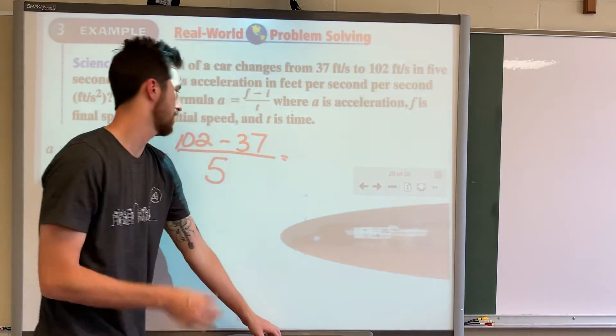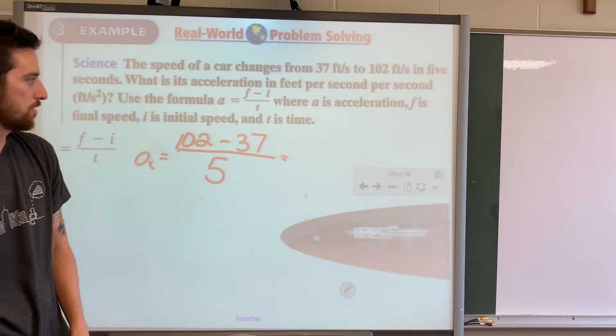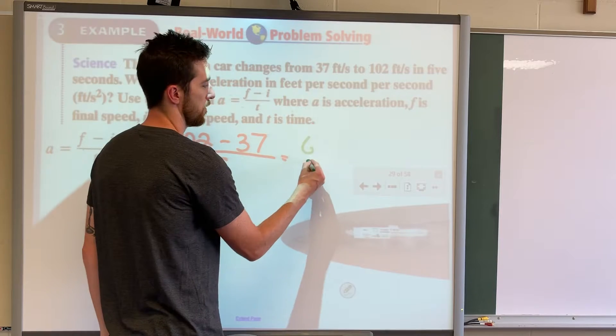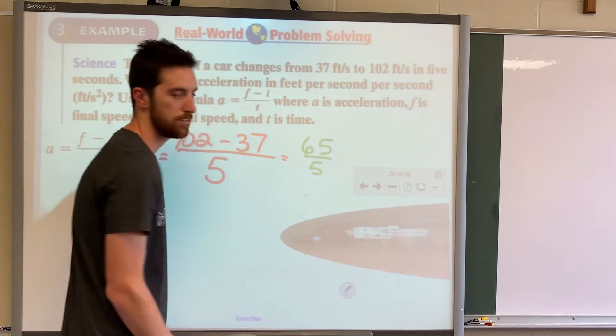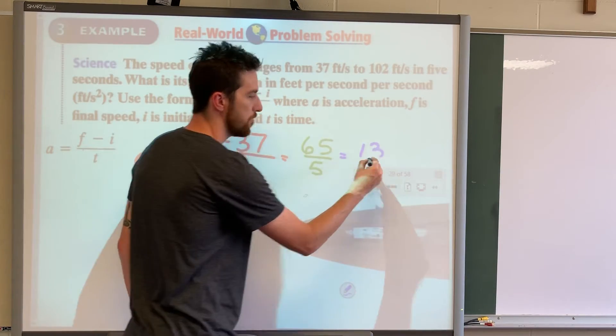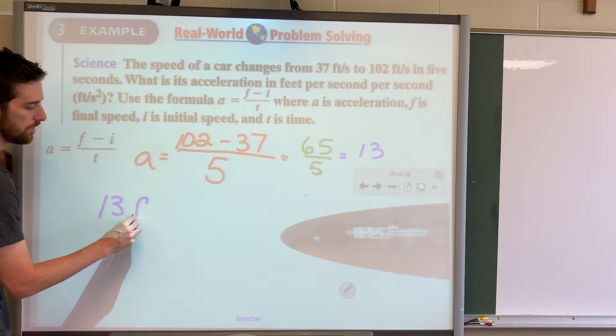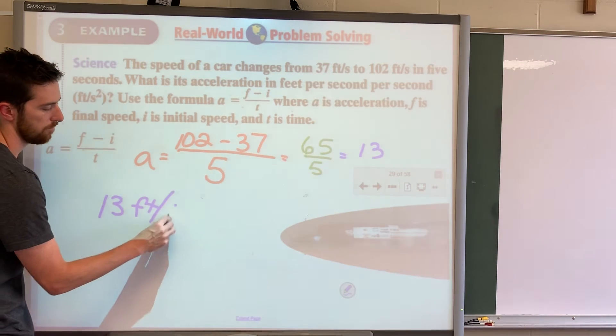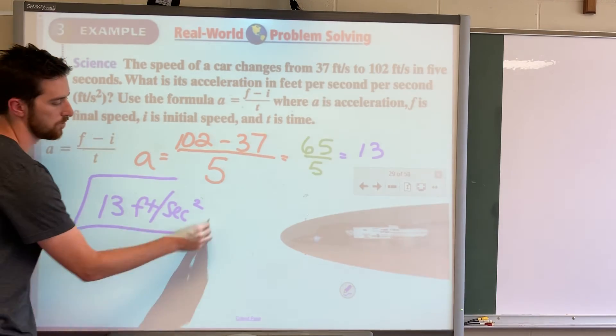So let's simplify what we can. 102 minus 37, let's see, 72, 65, divided by five, and 65 divided by five is 13. 13, 13 what? Well, 13 feet per second per second, which they're saying is 13 feet per second squared.